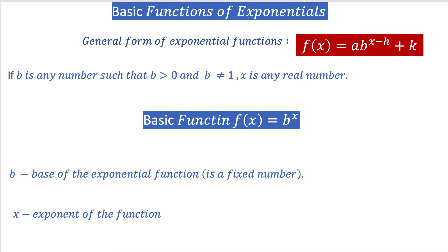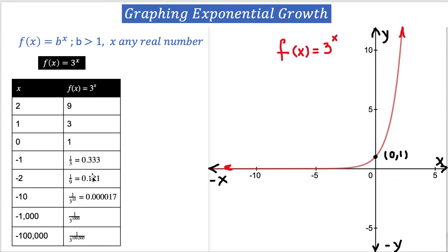Now let's see how we can graph exponential growth. Exponential growth happens when b, the base of the function, is greater than 1. We won't call it 'the' parent function because there are many parent functions — for example, 2^x is different from 3^x. They are two different parent functions, two different families, but they are very similar.